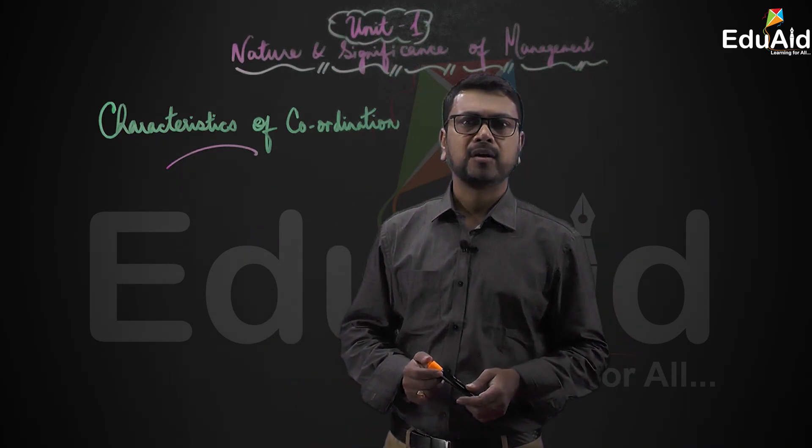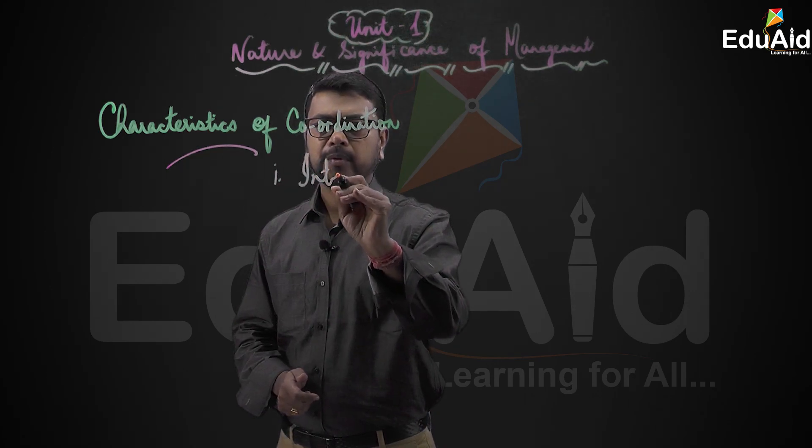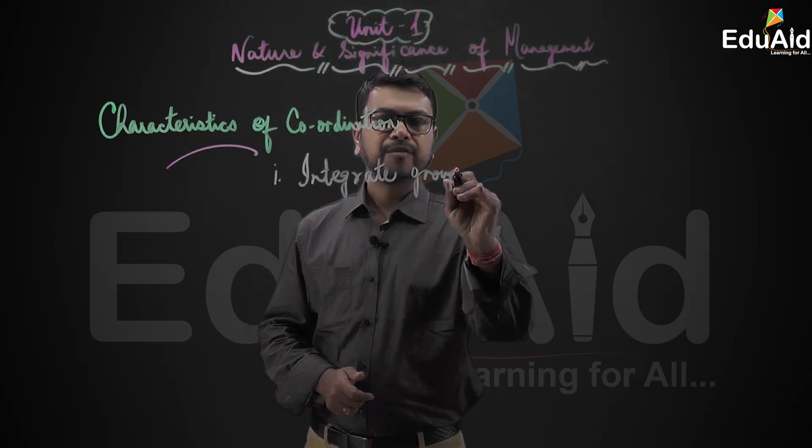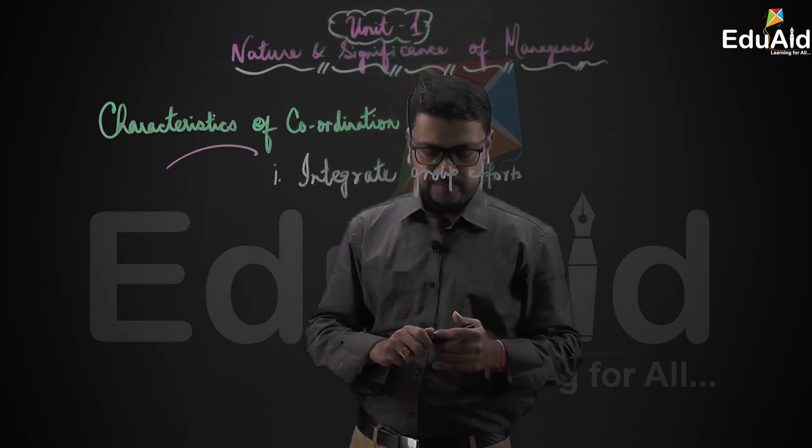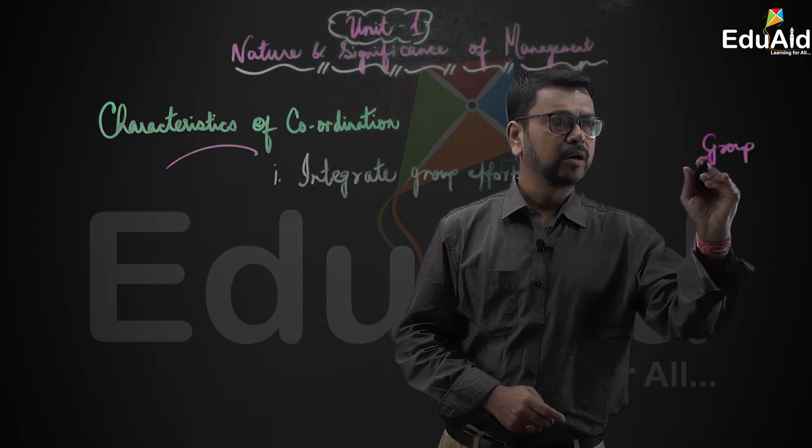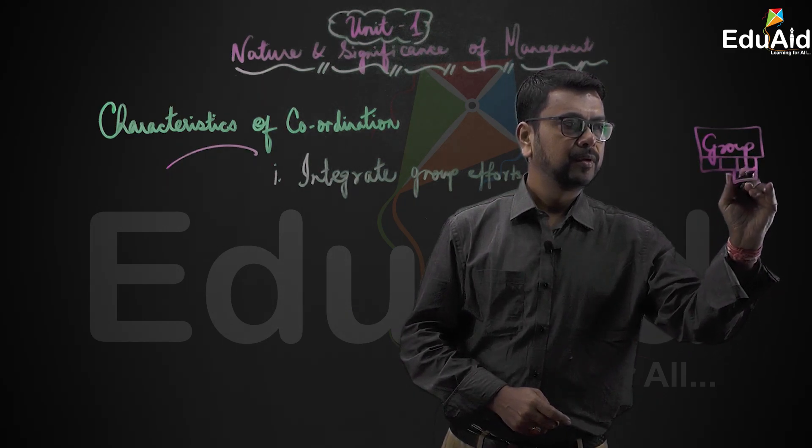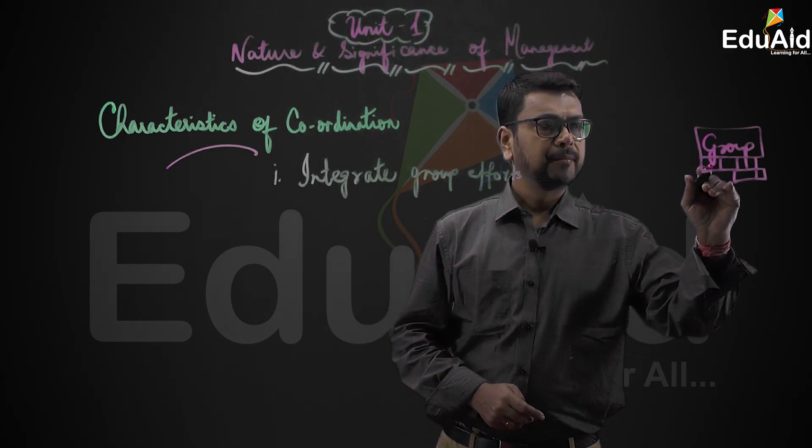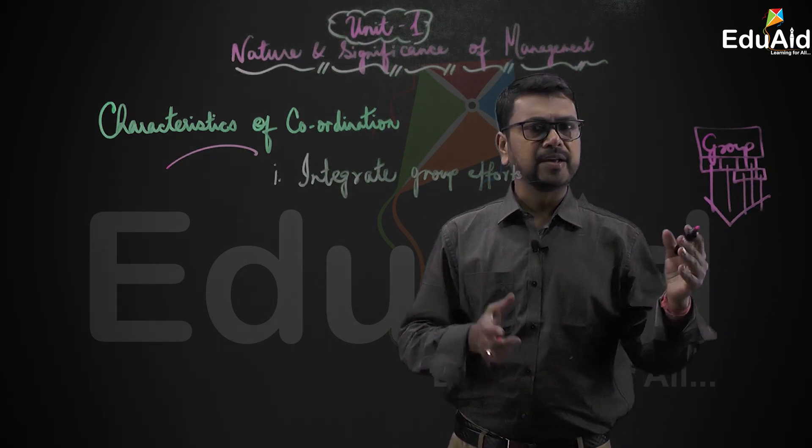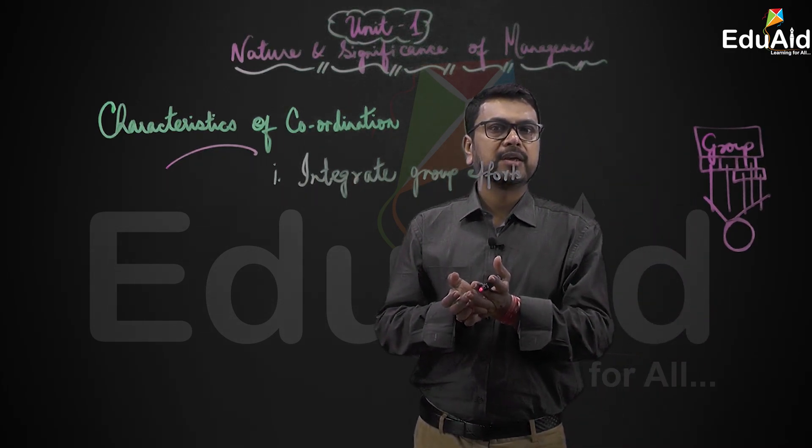Okay, there are six characteristics of coordination and let us learn one by one. The first one: coordination helps to integrate group efforts. This signifies that whenever there is a group activity, whenever there are various departments, coordination will ensure that all departments are working in a harmonious fashion. It will integrate and bind together the various activities of the departments so that it comes out as a whole, as one force to the end consumer.